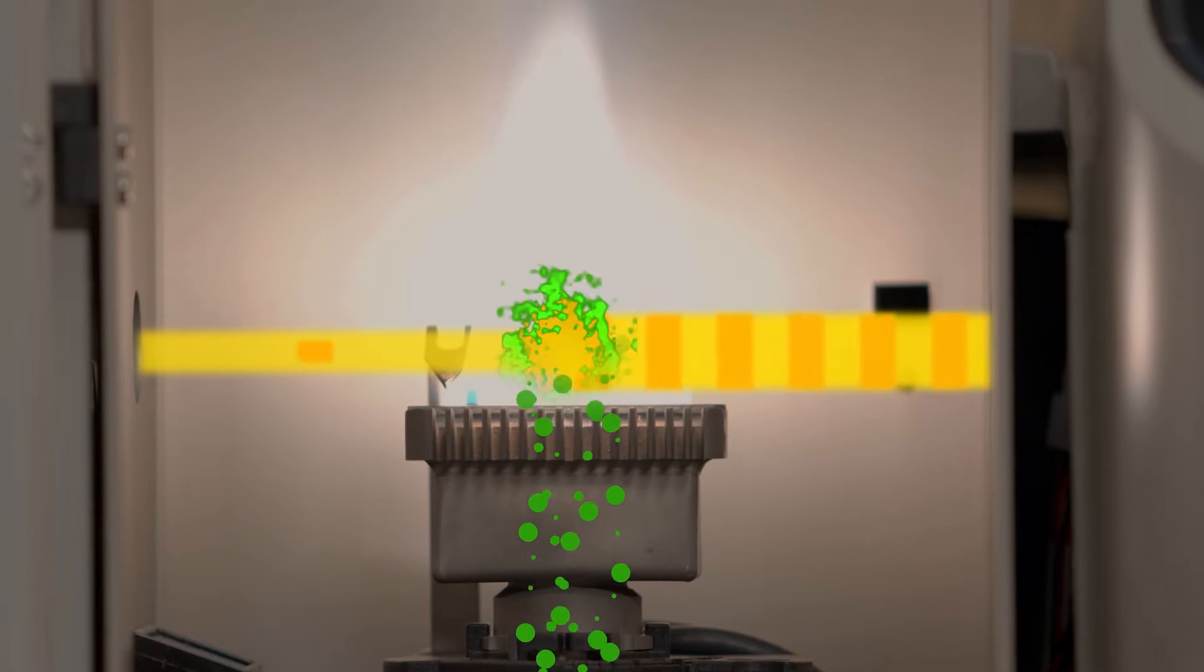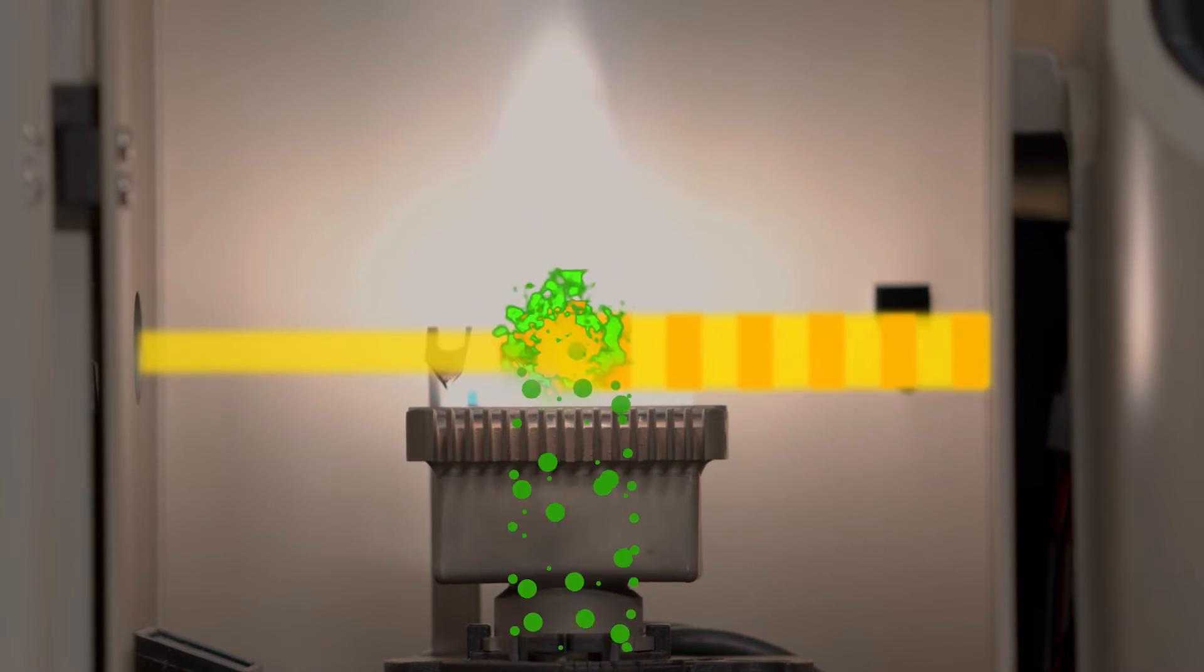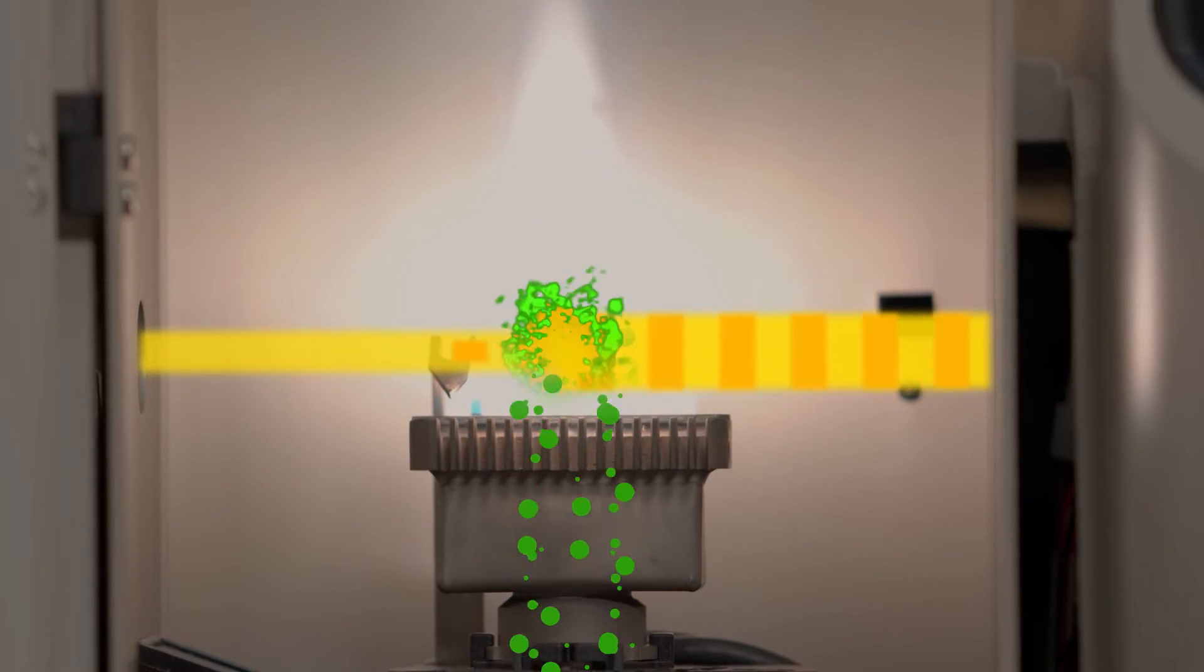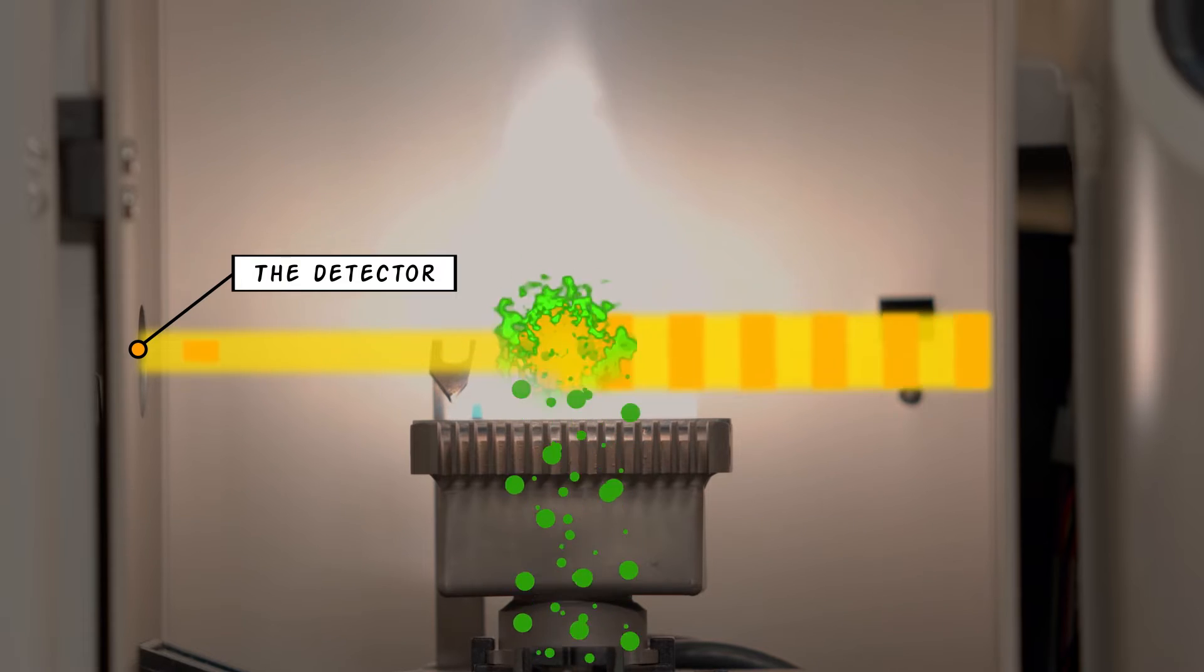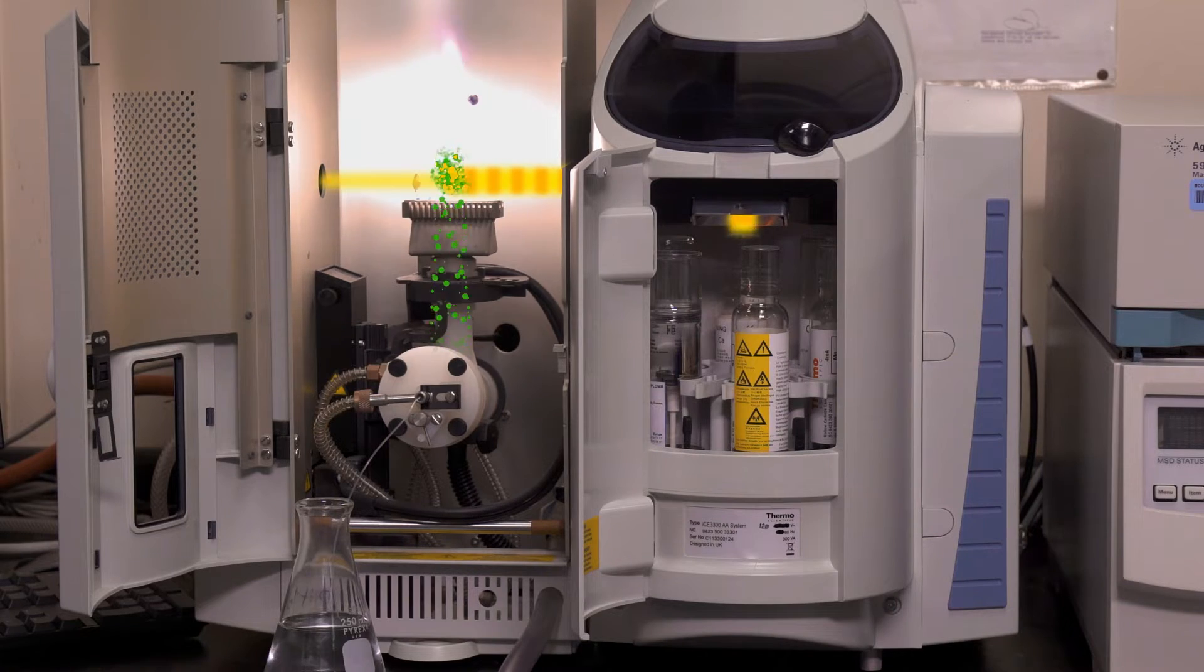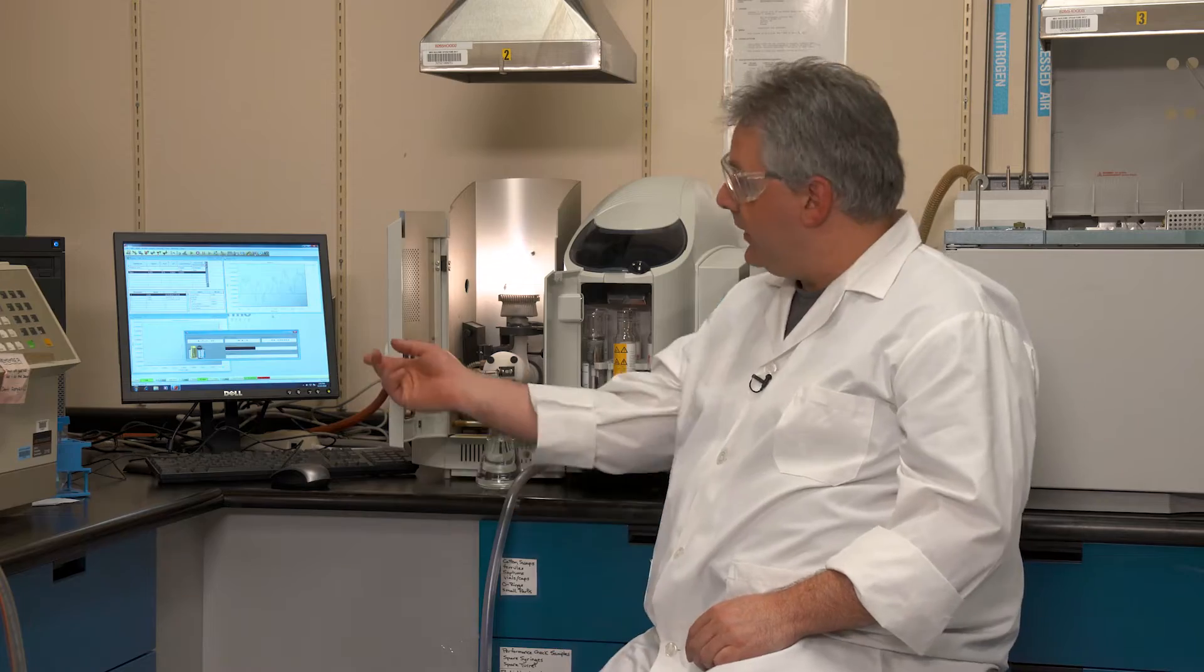As the light passes over the flame, some of it is absorbed by the calcium atoms in the vapor. Analysis begins when the light hits the detector on the opposite end from the lamp. The detector measures how much light was absorbed by the calcium atoms in the water sample. The less light reaching the detector means a higher concentration of calcium in the sample. And then the machine converts the light to a concentration of calcium, which we can see in the screen over here.